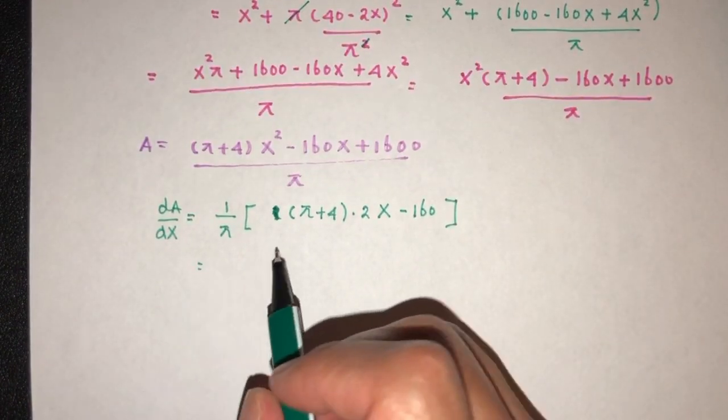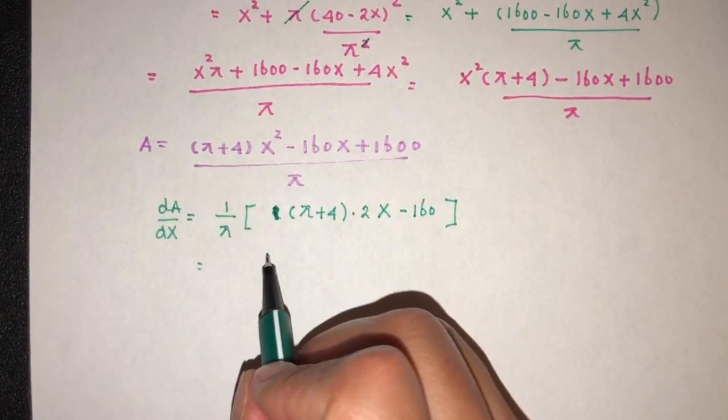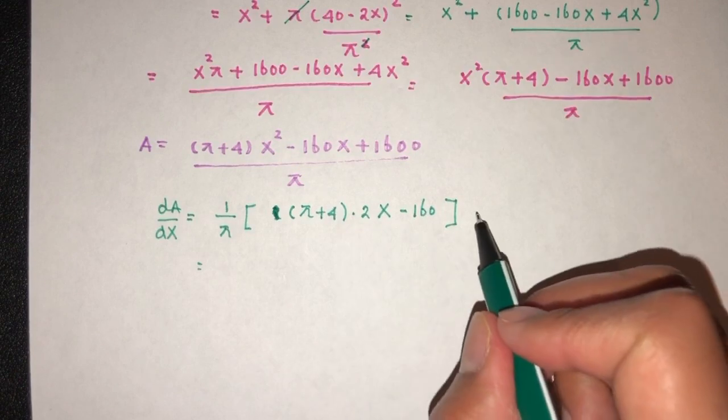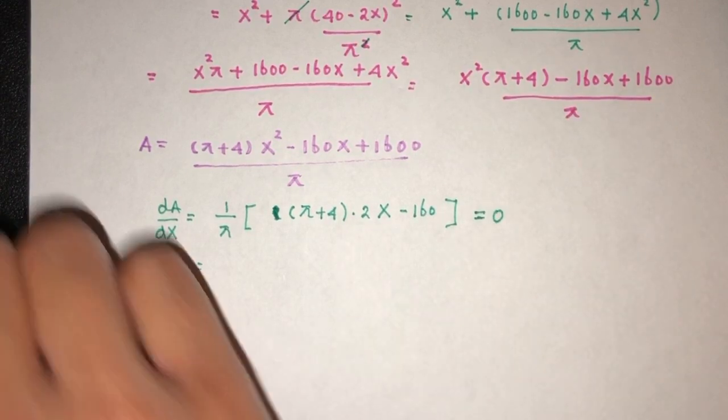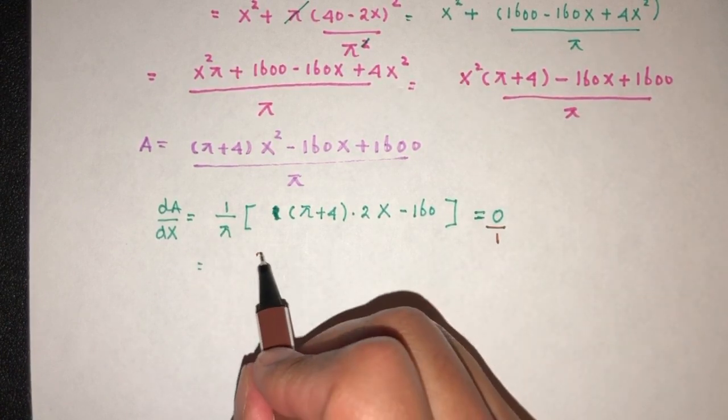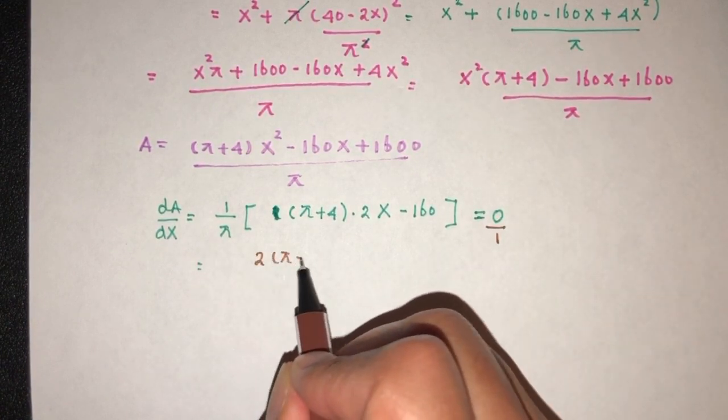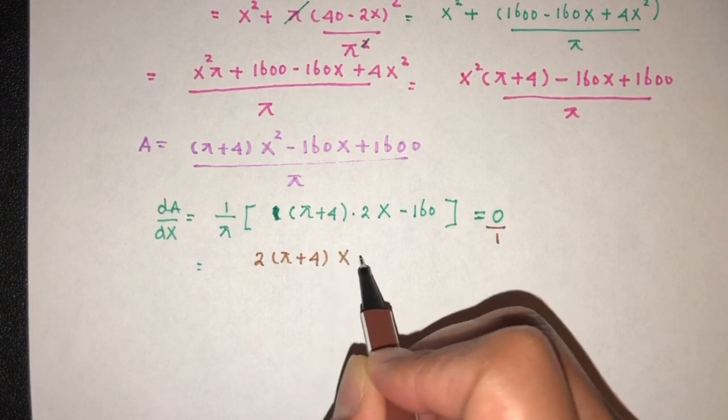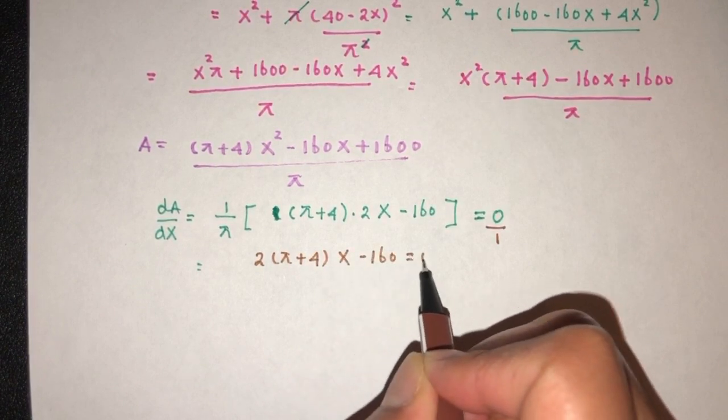So you have, so this is dA/dx. Now we have to equate to 0 because this is at the stationary value. Now we can first cross multiply. This will cancel out. You have 2(π+4)x minus 160. That will be 0.